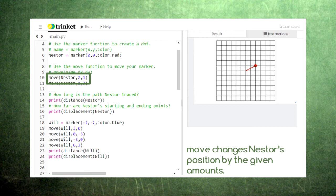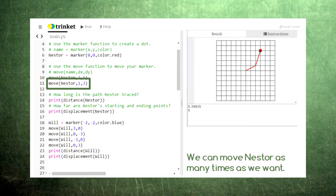Then, we use a function called move to move the dot by a certain amount. We enter the name of the dot to be moved and the amount we want it to move in the x direction and in the y direction. We can repeat the move function as often as we like. Each time, it moves nestor by the amounts we specify.